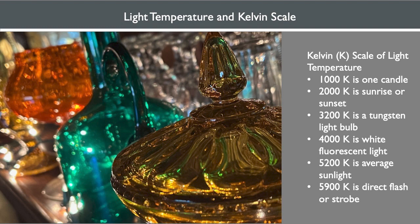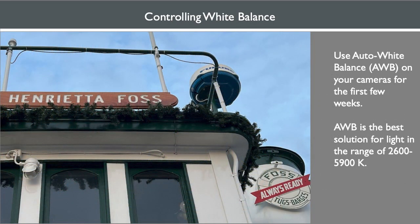A white fluorescent light is 4,000 Kelvin, and 5,200 Kelvin is average sunlight, whereas 5,900 Kelvin is direct flash or strobe. It is important to have as close a true white as possible in your photographs. To adjust for light temperature, your cameras have a white balance setting. It's recommended that for the first few weeks of class, use auto white balance, which only operates accurately in the range of 2,600 to 5,900 Kelvin.